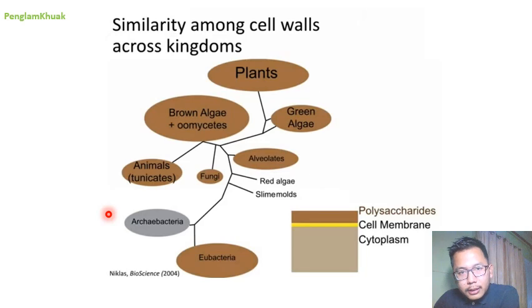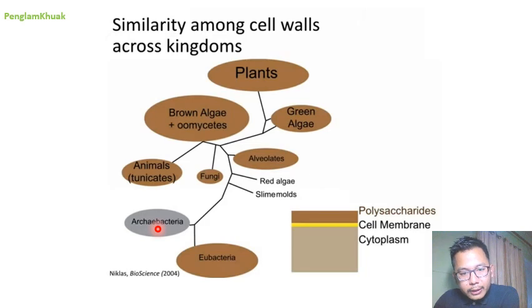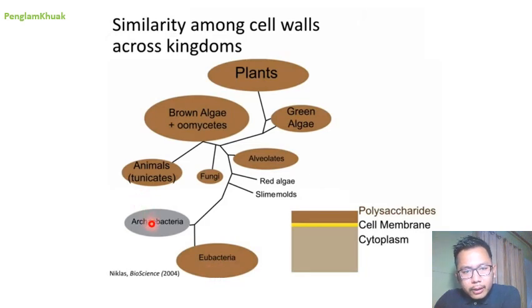Archaebacteria cell walls are made up of pseudomurein — P-S-E-U-D-O-M-U-R-E-I-N. Eubacteria are known as the true bacteria, whereas in case of eubacteria the cell wall is made up of peptidoglycan, but in archaebacteria it is pseudomurein. Because of that, you can distinguish between eubacteria and archaebacteria based on the cell wall.